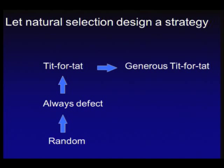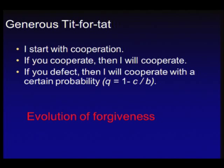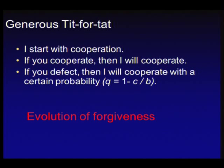Within very few generations, Tit-for-Tat was replaced by another strategy called Generous Tit-for-Tat. Generous Tit-for-Tat works as follows: I start with cooperation; if you cooperate, I cooperate; and if you defect, I cooperate with a certain probability. In my opinion that's a method to save many marriages — you can roll dice to decide whether to forgive your partner. The interesting thing is that in the presence of mistakes, natural selection moves to a strategy with a mechanism to correct mistakes — a mechanism of forgiveness. A winning strategy can forgive.